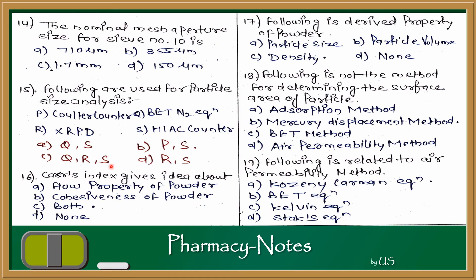Question 16: Carr's index gives an idea about? Carr's index is a method to determine flow properties of powder. It gives ideas about: A — flow property of powder, and B — cohesiveness of powder, since higher cohesiveness means lower flow property. The answer is both A and B.